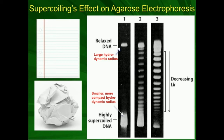But there's another factor that can play a role in migration down a gel. Suppose I have two DNA strands that are exactly the same — same sequence, same everything. They're identical, except in one way: one of them is a relaxed DNA strand and the other is highly supercoiled. They're the same DNA strand, however they have different levels of supercoiling.